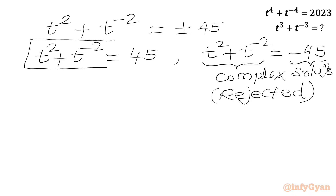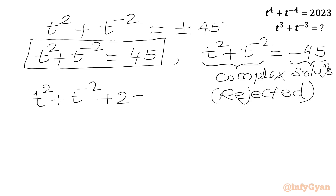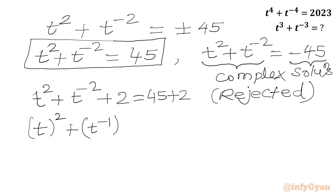Now we perform the same operation again. We add 2 to both sides: t² + t⁻² + 2 = 45 + 2 = 47. We rewrite t² as (t¹)² and t⁻² as (t⁻¹)², and the 2 can be written as 2 · t · t⁻¹.